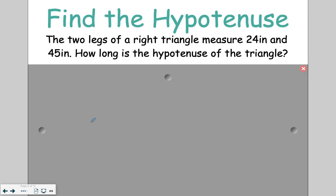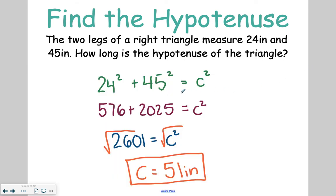Go ahead and find the hypotenuse for this triangle on your own. So we've got 24 squared plus 45 squared equals C squared. 576 plus 2025 equals C squared. 2601 equals C squared. The square root of that is 51 inches.